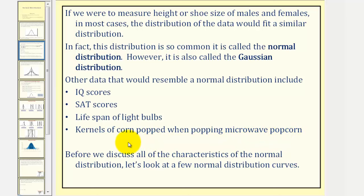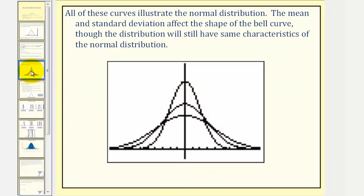If you've ever popped a microwave popcorn, you know it starts popping slowly, then pops quickly, and then slows down again. Before we discuss all the characteristics of the normal distribution, let's look at a few normal distribution curves. All the curves illustrated here demonstrate the normal distribution. The mean and standard deviation affect the shape of the bell curve, though the distribution will still have the same characteristics of the normal distribution.